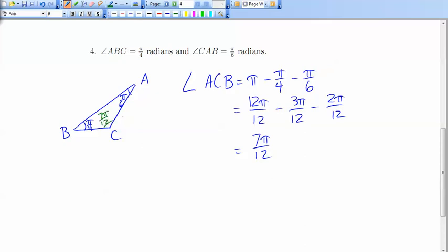Now 7 twelfths of π is a bit bigger than half of π, because 6π/12 is a half π. So this angle is a little bit bigger than a right angle. It's an obtuse angle.